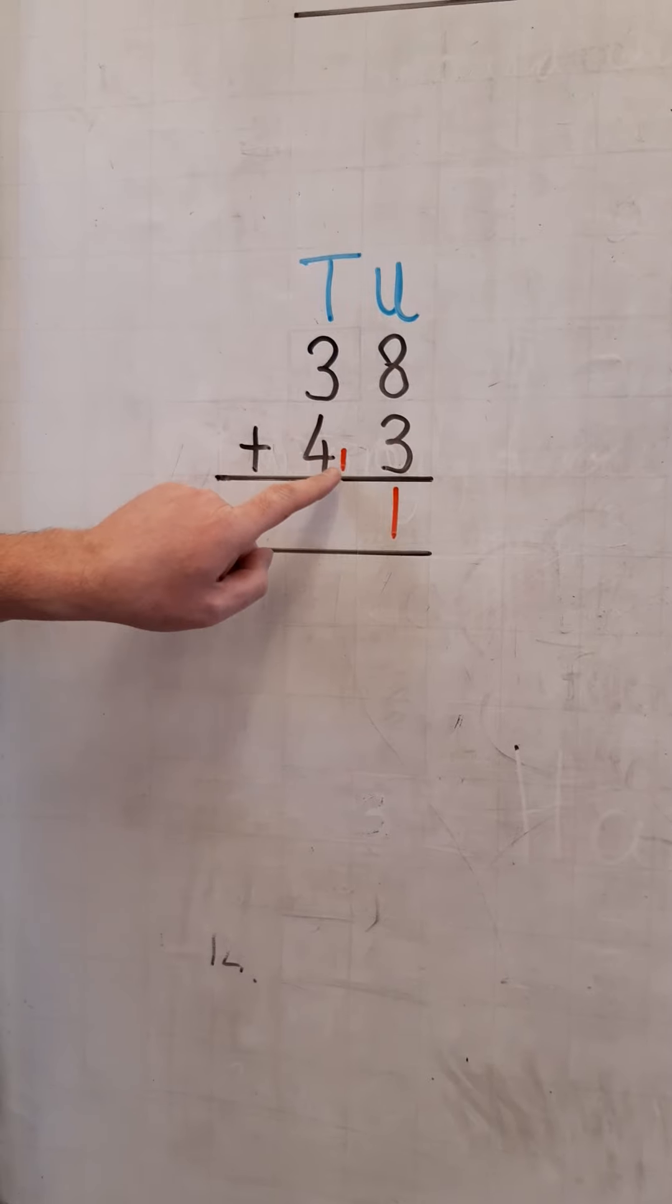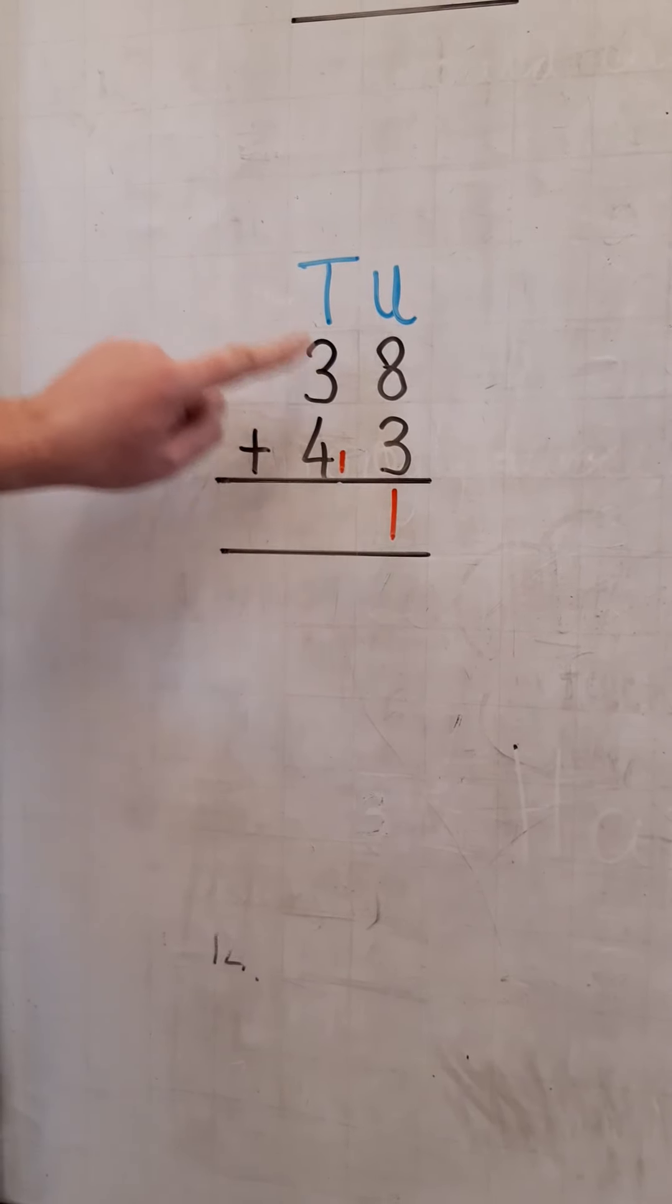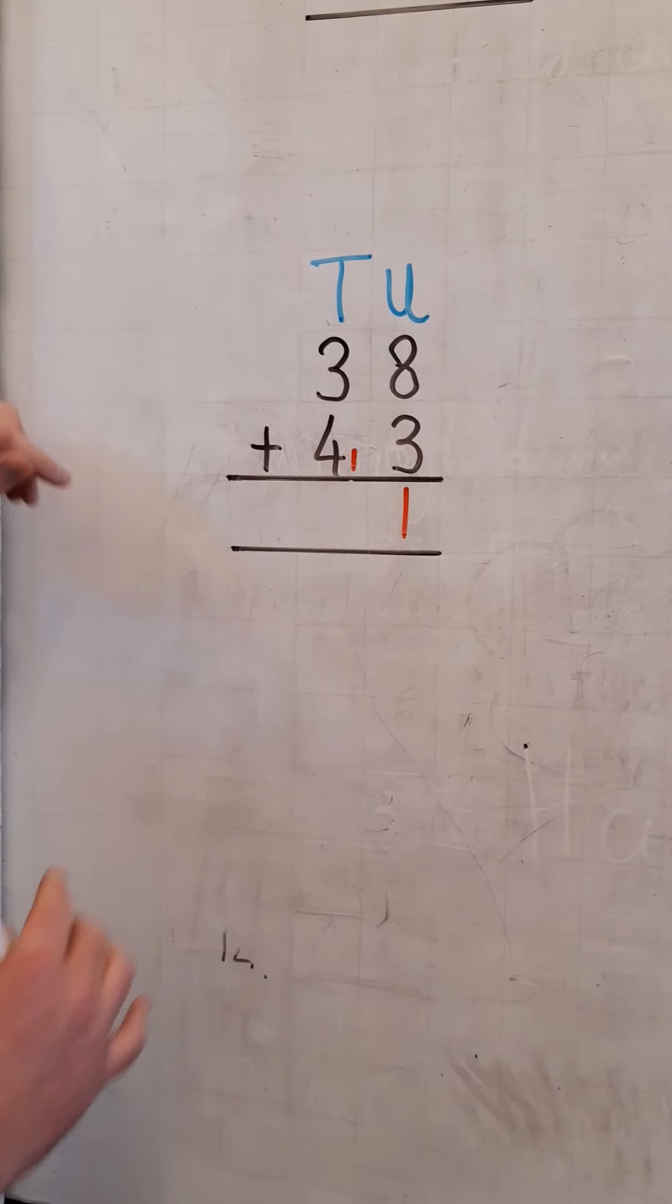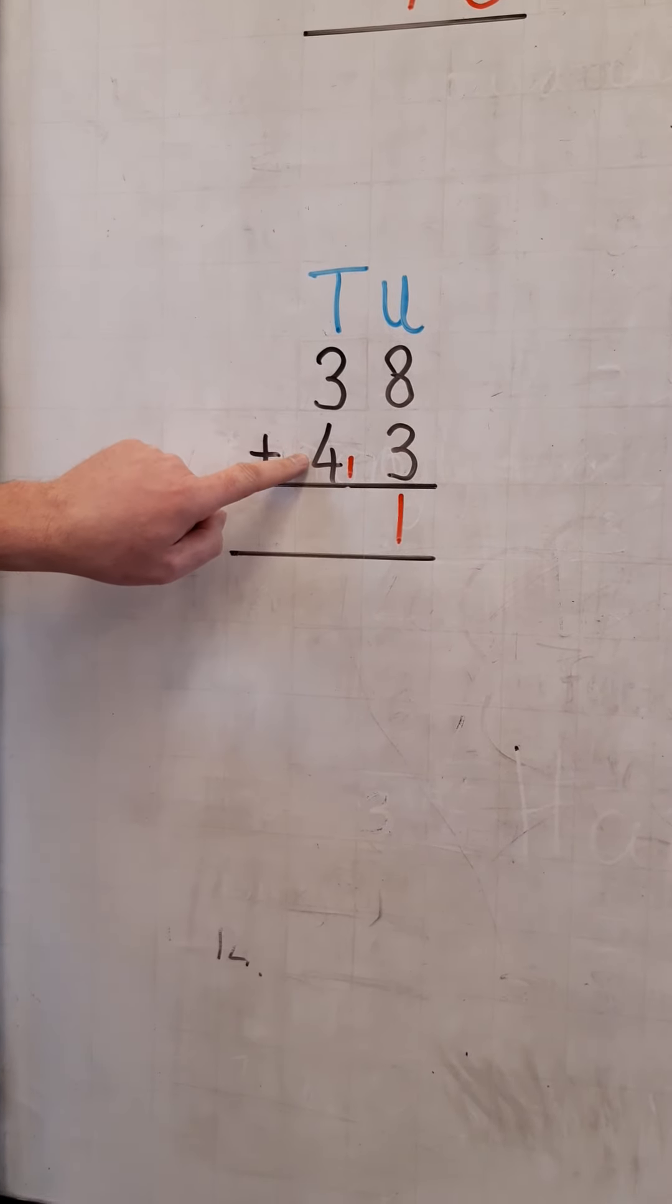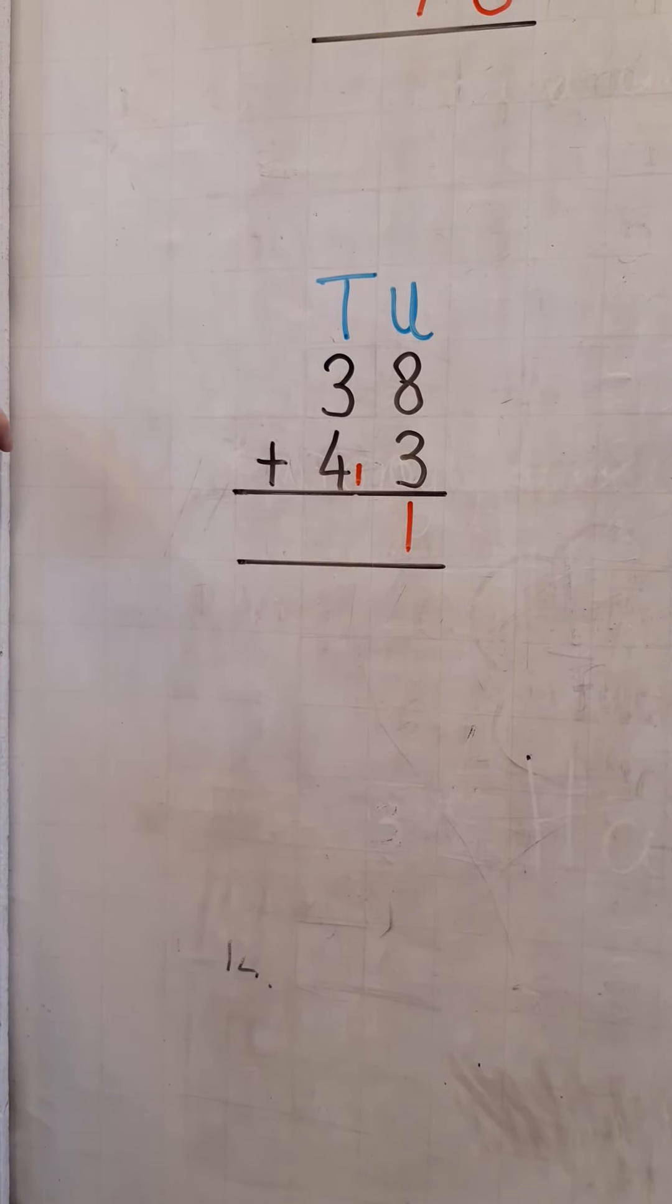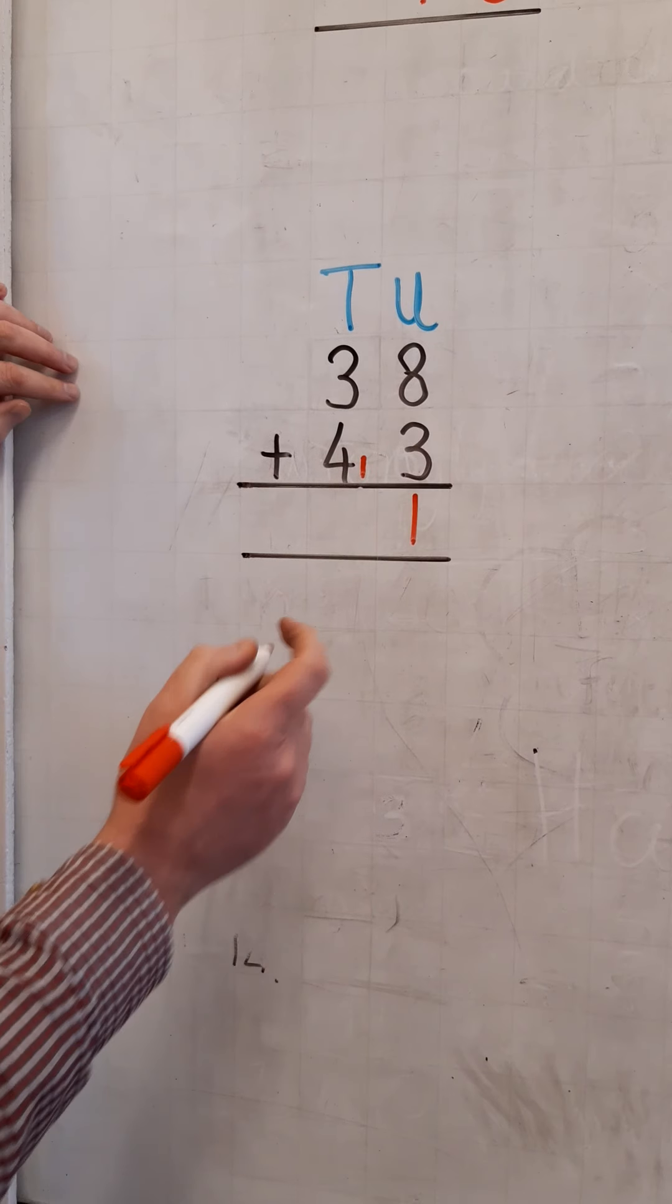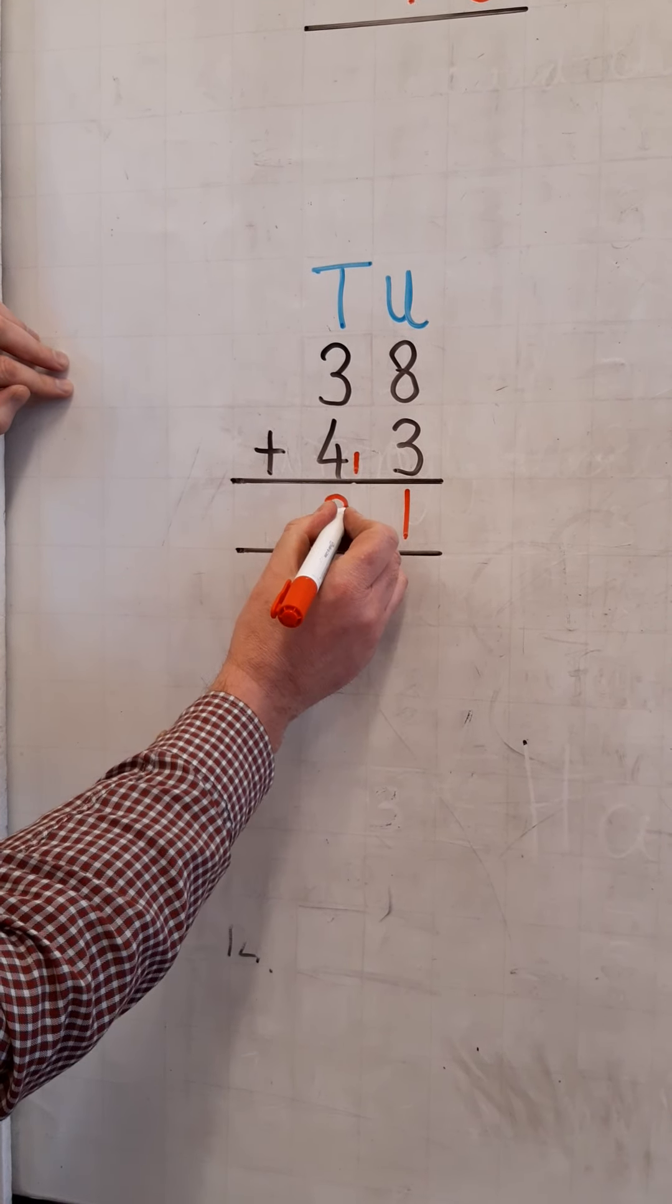And this one ten is still there. It's part of this place now, the tens place. And we can simply add those together. We have four tens, add three tens, gives us seven tens, and we add that one more, which gives us a total of eight tens, giving us a final answer of eighty-one.